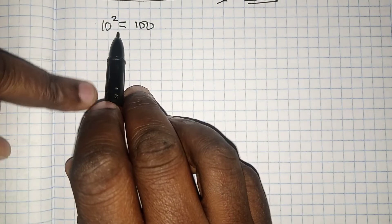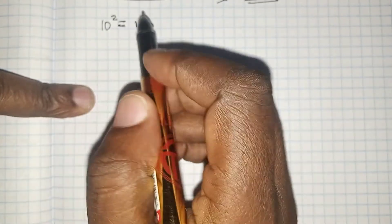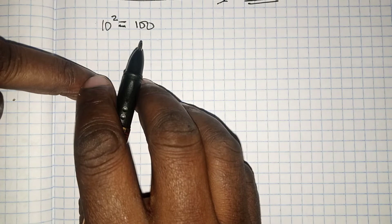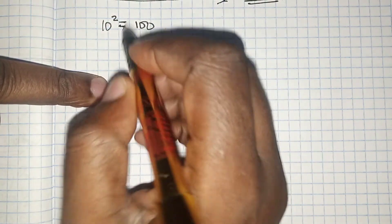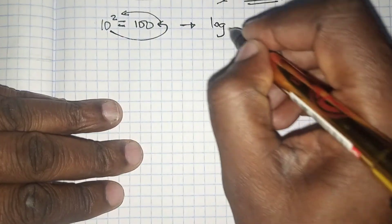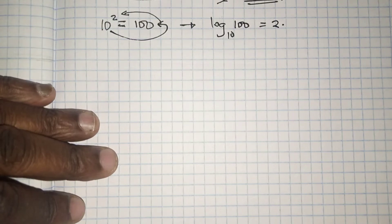We know that 10 raised to power 2 is 100, and this is the index notation simply because 10 raised to power 2 — this is the index — is equals to 100. How do we write this in logarithmic notation? My approach is very simple because I call it the anti-clockwise movement. I start here: log to base 10 of 100 is equals to 2.